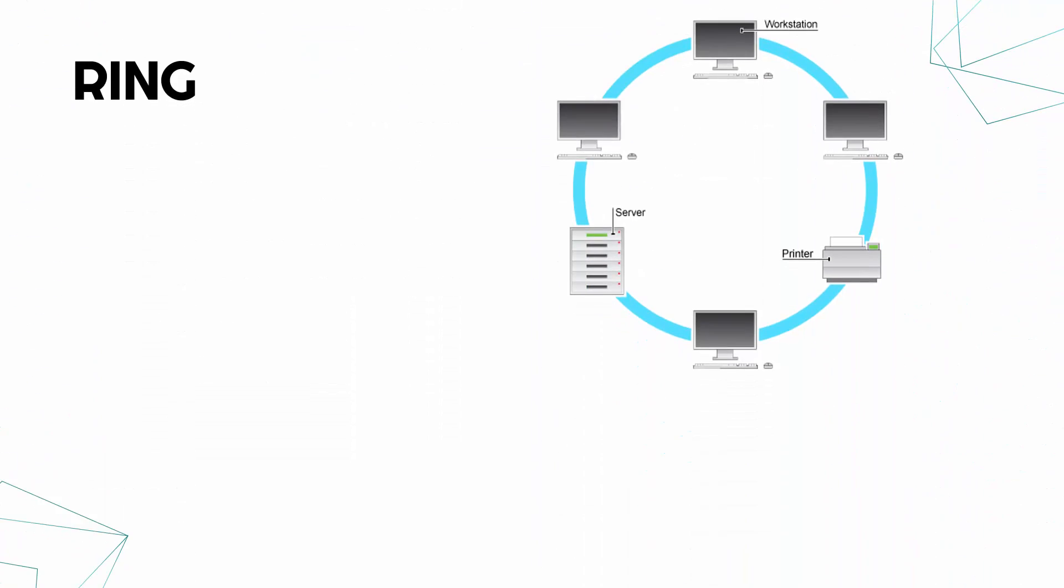And our final topology is a ring topology, which again helpfully gives us a very clear idea of what it looks like. In a ring topology, each device is connected to two other devices. Again, like mesh and like bus, this will be for wired networks only. We've got a nice ring formed.